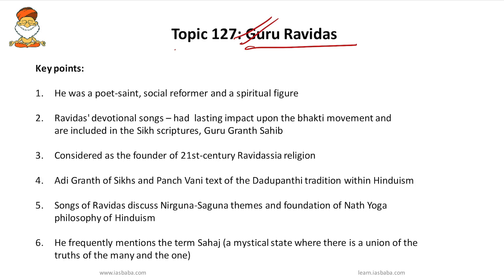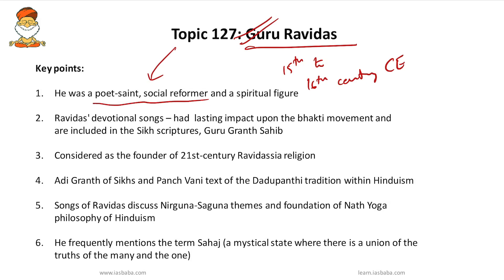The next topic is Guru Ravidas. He was a poet, saint, social reformer, and spiritual figure during the 15th to 16th century CE. Ravidas taught the removal of social divisions of caste and gender, and promoted unity in the pursuit of personal spiritual freedom. He was regarded as a guru in Punjab, Uttar Pradesh, Rajasthan, Maharashtra, and Madhya Pradesh. Ravidas is famous for his devotional songs, which are included in Sikh scriptures like the Guru Granth Sahib, and his devotional songs had a lasting impact on the Bhakti movement.